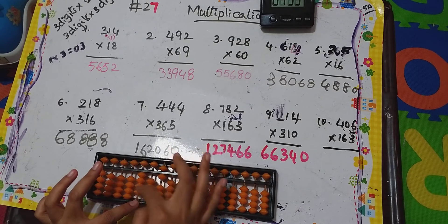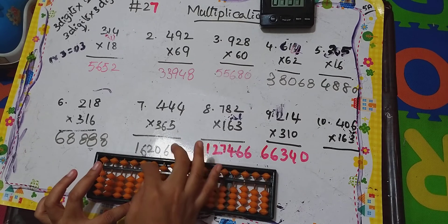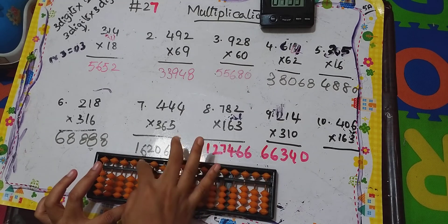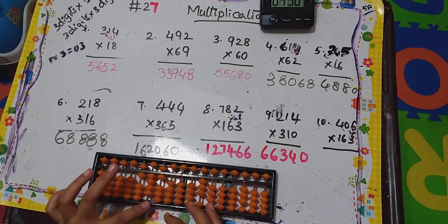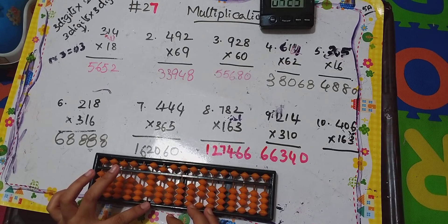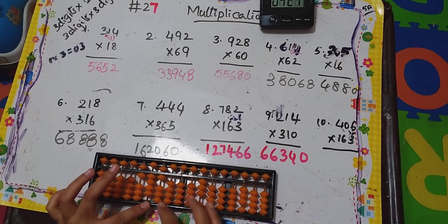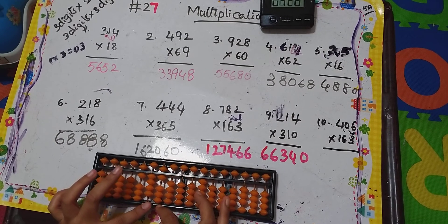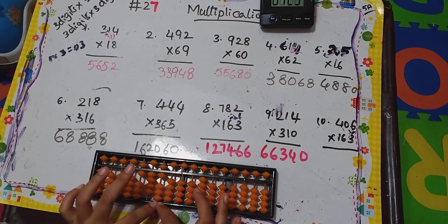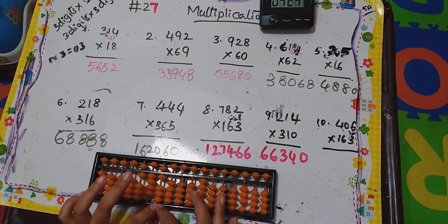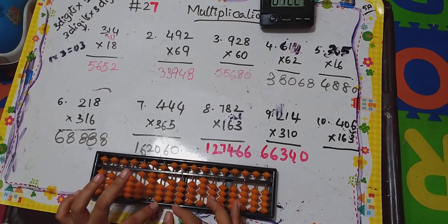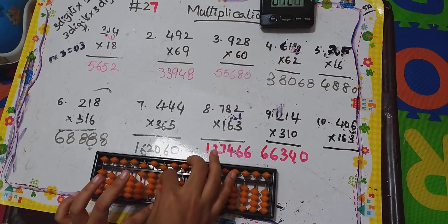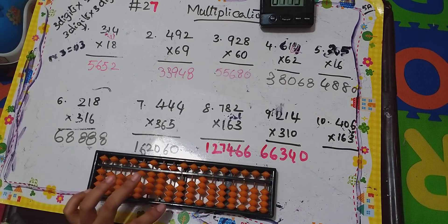6 fours are 24 — so how to get 24 here? Done — 24. Next, 6 times 0 is 00 — done. Next, 6 sixes are 36 — 36 done.